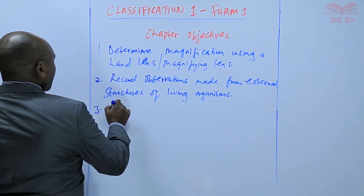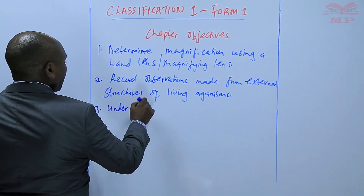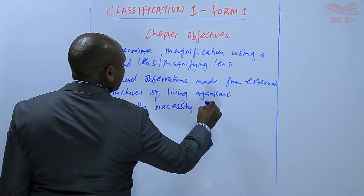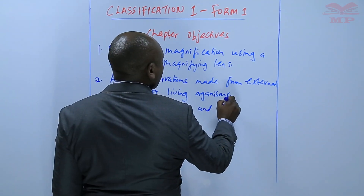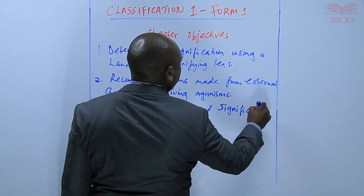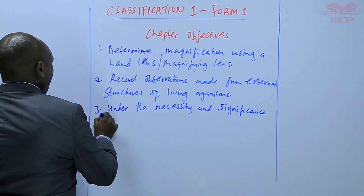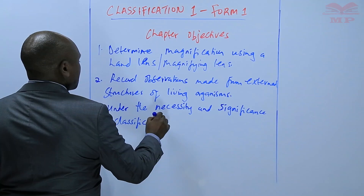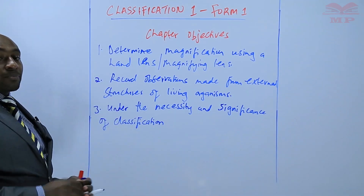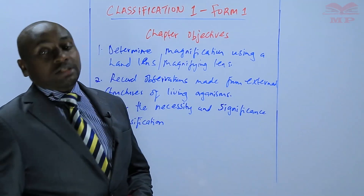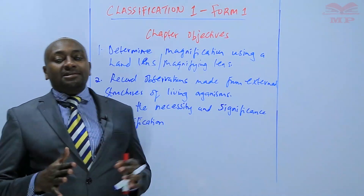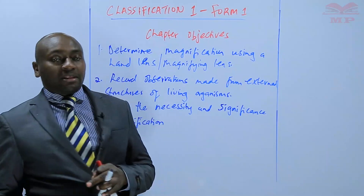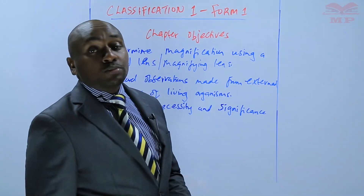Number three: the student should be able to understand the necessity and significance of classification. It is important to understand why classification is important — why do we need to place living organisms into groups? Why do we need to classify them? That is basically what that objective is all about.